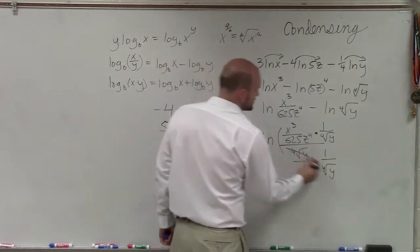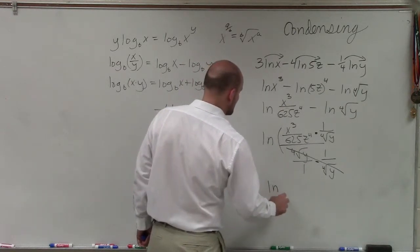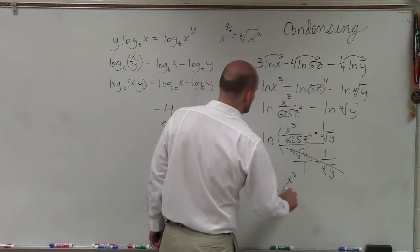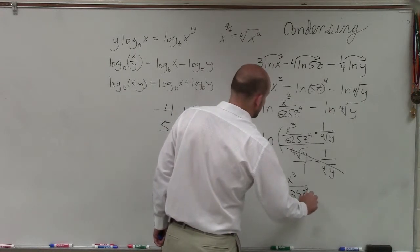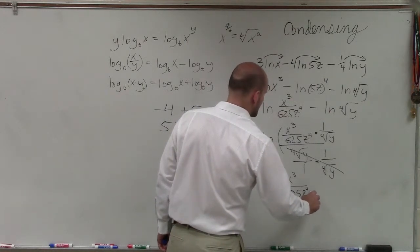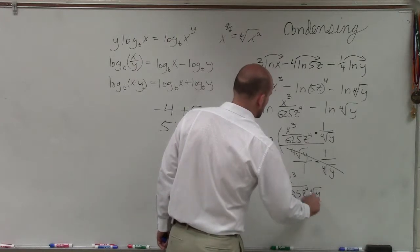Therefore, this is just going to multiply out to 1. So my final answer is going to be ln of x cubed divided by 625 z to the fourth times the fourth root of y.